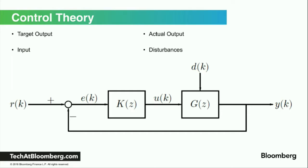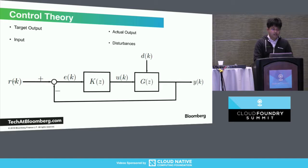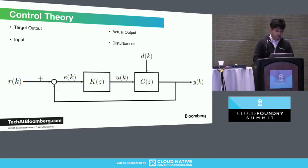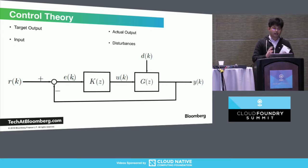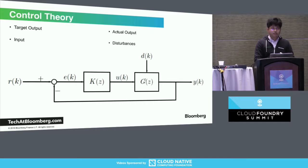Here's the textbook definition of control theory — it's the same architecture as the autoscaler I showed earlier. An introductory textbook will show three components. You have the target input or reference value, R — in our autoscaler that's the target CPU utilization, say 70%. Then you have the actual utilization, the output Y, and you get the difference to get the error. Based on that error, you put it into your controller C, and it gives you the input value U — the number of instances — which is used to run CF scale.